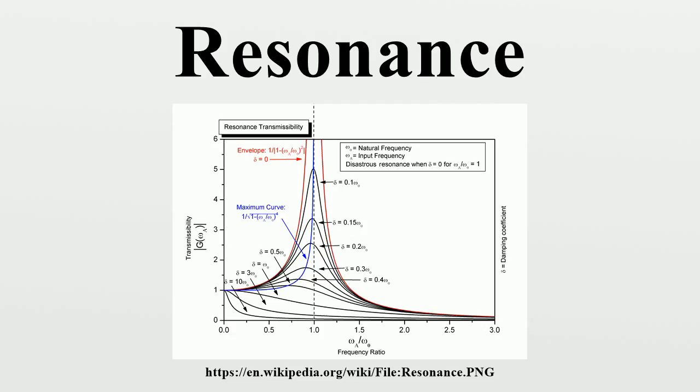The Q factor or quality factor is a dimensionless parameter that describes how underdamped an oscillator or resonator is, or equivalently, characterizes a resonator's bandwidth relative to its center frequency. Higher Q indicates a lower rate of energy loss relative to the stored energy of the oscillator; the oscillations die out more slowly. A pendulum suspended from a high-quality bearing, oscillating in air, has a high Q, while a pendulum immersed in oil has a low Q.